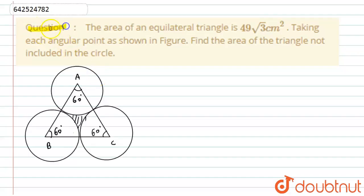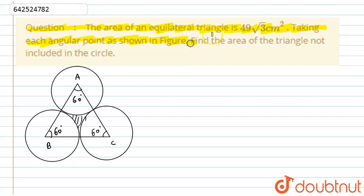Hello students. The question given here states: the area of an equilateral triangle is 49√3 cm². Taking each angular point as a center as shown in the figure, find the area of the triangle which is not included in the circles.